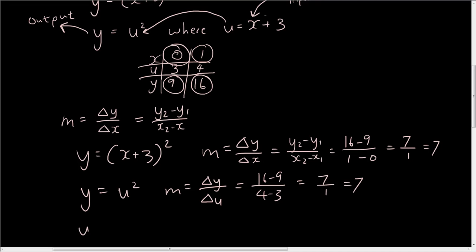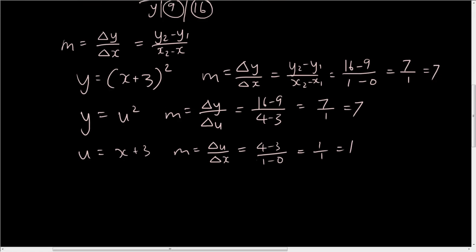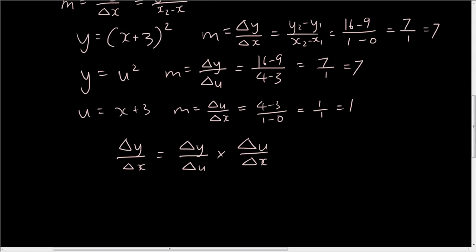Now let's look at our third equation: u is equal to x plus 3. The gradient of this equation is equal to change in u over change in x. So we have 4 minus 3 over 1 minus 0, which is 1 over 1, so it's 1. You would notice that change in y over change in x is equal to change in y over change in u times change in u over change in x. We have 7 equals 7 times 1, so therefore this works.